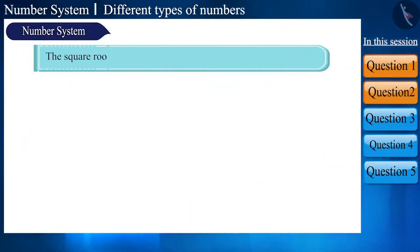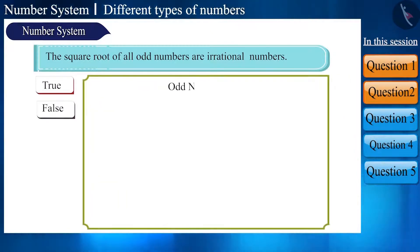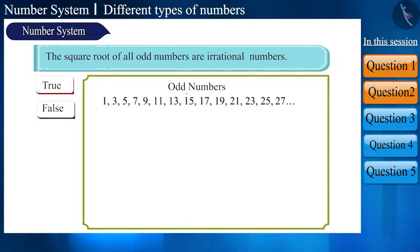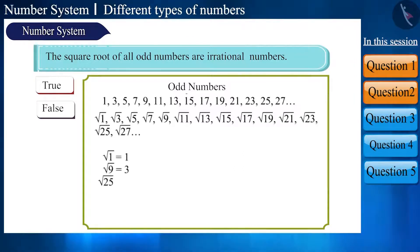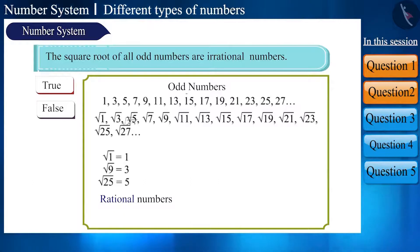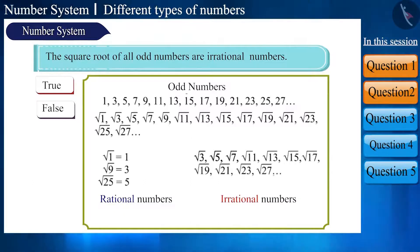The square root of all odd numbers are irrational numbers. State whether this statement is true or false. Let's write odd numbers: 1, 3, 5, 7, 9, 11, 13, and so on up to 27. If we take their square roots, the square roots of 1, 9, and 25 are 1, 3, and 5 respectively, which are natural or rational numbers. All the other square roots are irrational numbers. Hence, the statement that the square root of all odd numbers are irrational numbers is false.